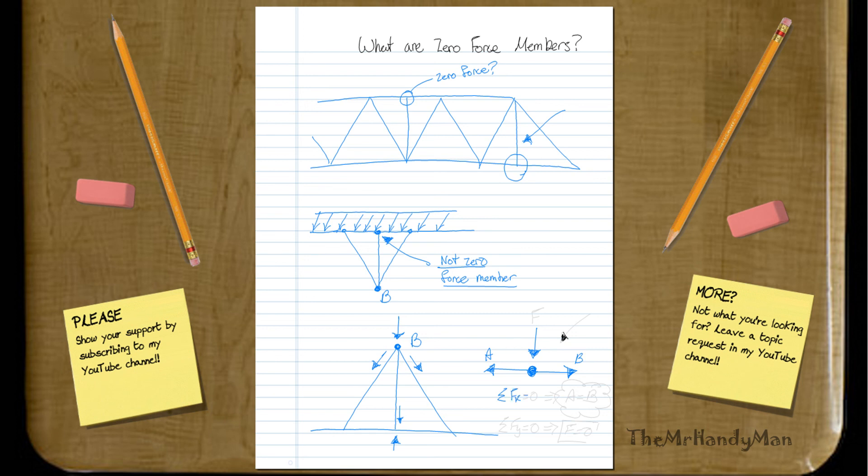you would have sigma F of X equals zero, thus A must equal B. Whereas if we say sigma F Y is equal to zero, we just know that force F must equal zero, and that's why they call it a zero force member, because if you do a joint analysis at that single point you'll have a zero force in that particular member.